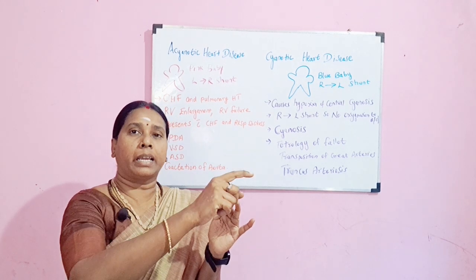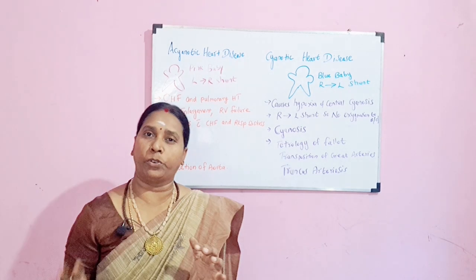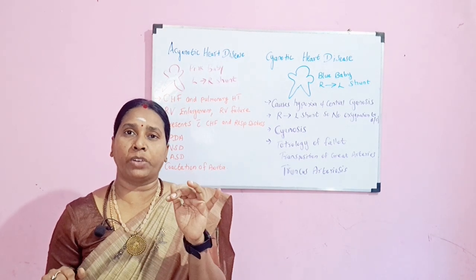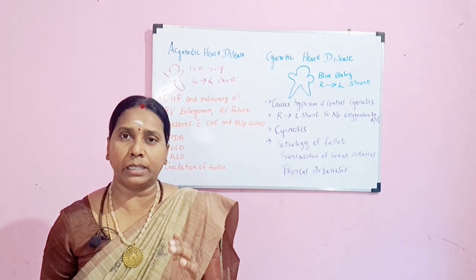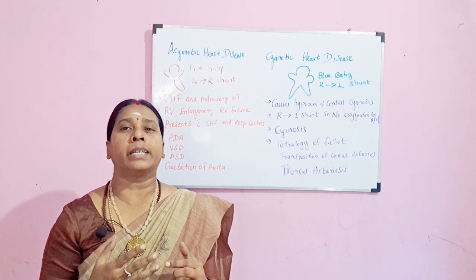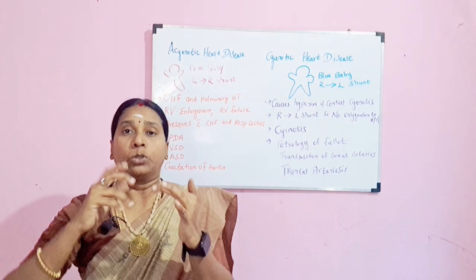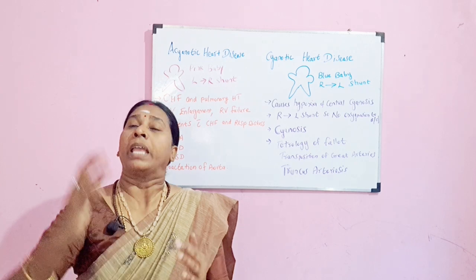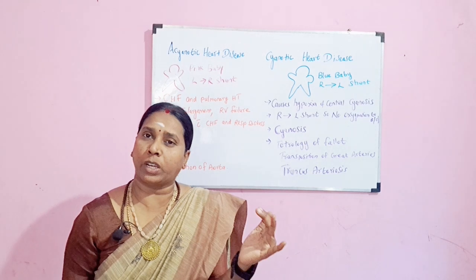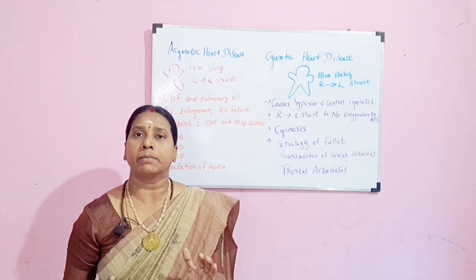From the right side, blood goes to the pulmonary artery and through the pulmonary artery to the lungs for purification. So now, already oxygenated blood is again going to the lungs for purification. The lungs are getting overloaded, and the baby is going to have pulmonary symptoms.